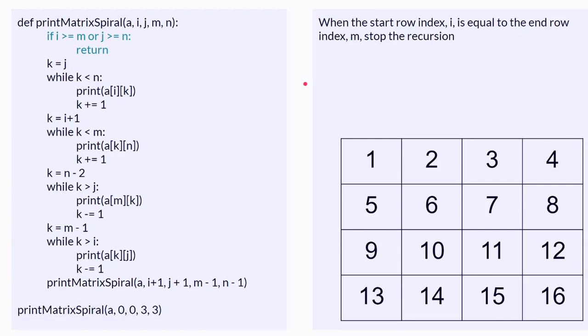So, the first thing you do is you see if the row index I is equal to the end row index M, and you stop the recursion. Same for J and N, because that means the start index and the end index are the same.